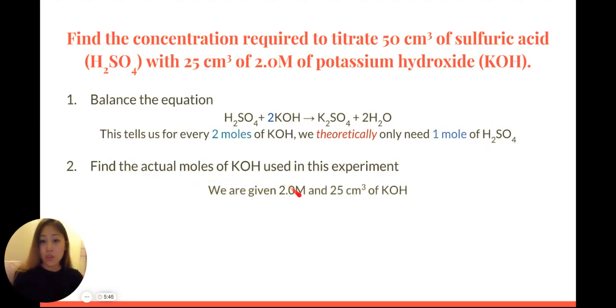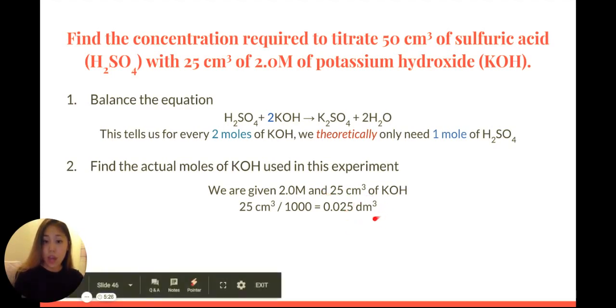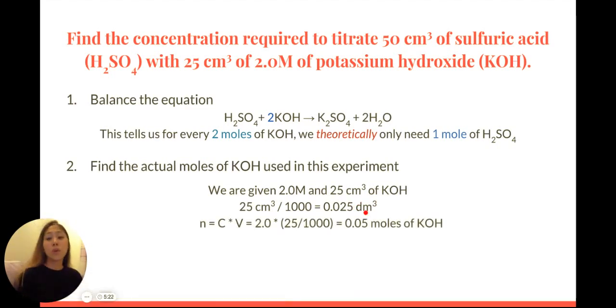We are given 2.0 molar and we're given 25 centimeters cubed. So, knowing these two—knowing the concentration and the volume—we can calculate the moles using the equation. We're given centimeters cubed, which means in this case we need to divide this by 1000 and convert this into our favorite unit, decimeters cubed. And then you multiply this by the concentration of 2.0 molar, and that's going to give us 0.05 moles of potassium hydroxide.